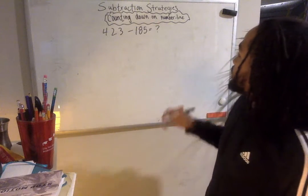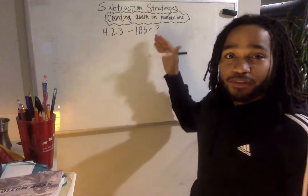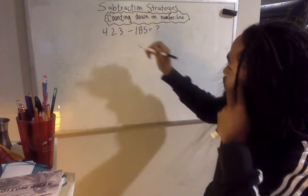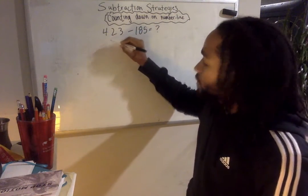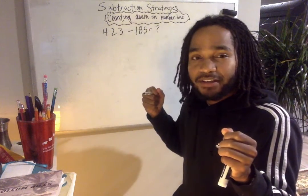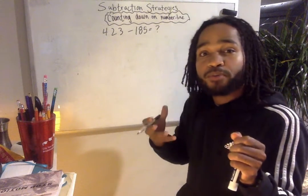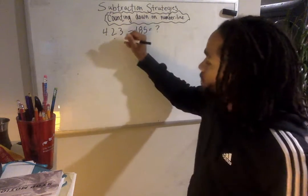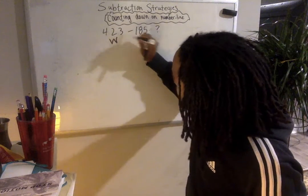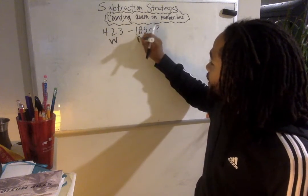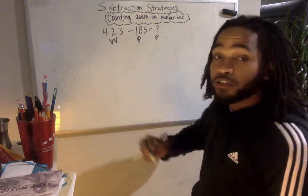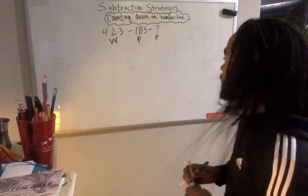So what I want to do first is label the equation just so I understand what everything is. 423, it's a subtraction. We are starting with the whole and we're taking something away, which is a part to find another part. So this is the whole. I am going to take away a part to find that unknown part.